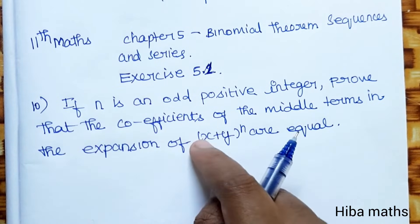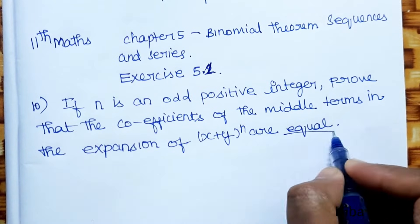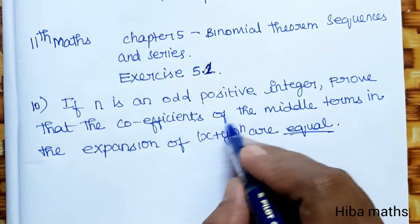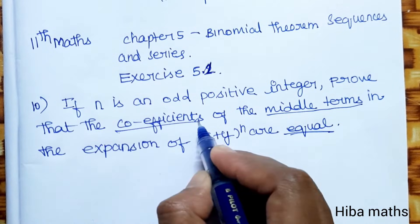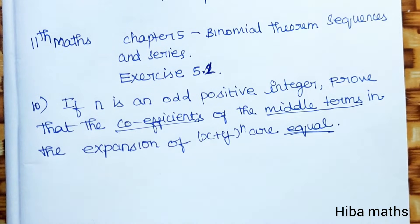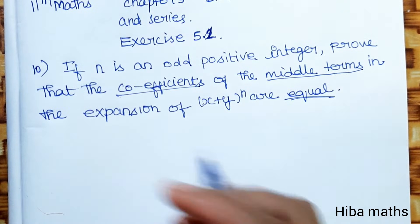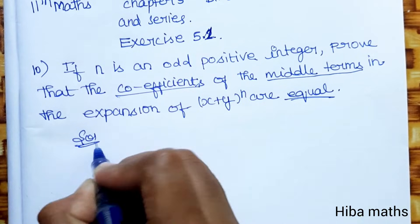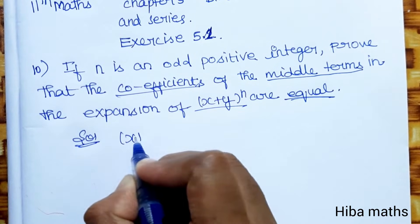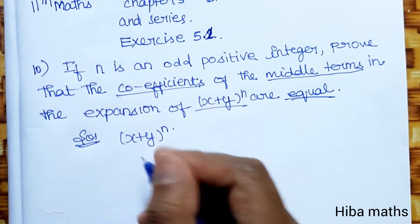of middle terms in the expansion of (x+y)^n are equal. So we need to prove the coefficients of the middle terms are equal. Let's solve this. In the expansion of (x+y)^n, correct?